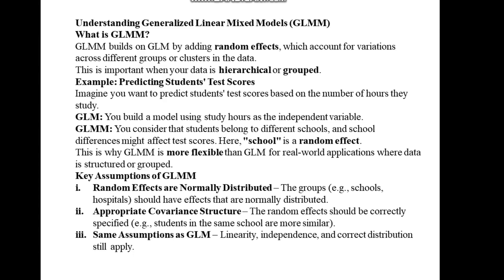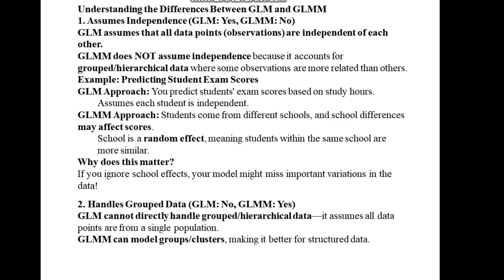The key assumptions of GLMM are: first, random effects are normally distributed — the groups, such as schools or hospitals, should have effects that are normally distributed; second, appropriate covariance structure — the random effects should be correctly specified, for example students in the same school are more similar to each other; and third, the same assumptions as GLM — linearity, independence, and correct distribution still apply.